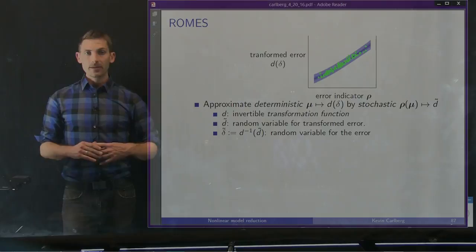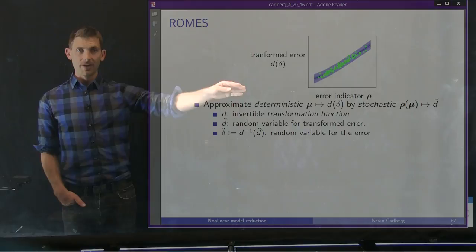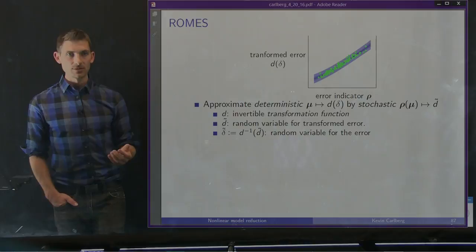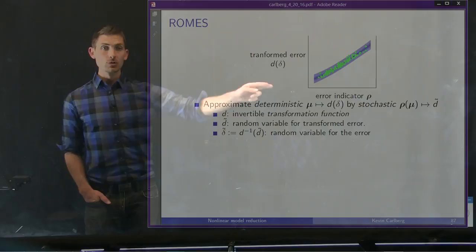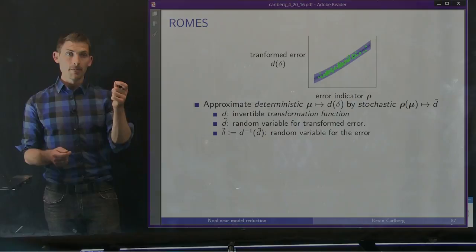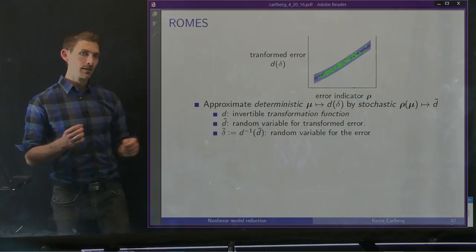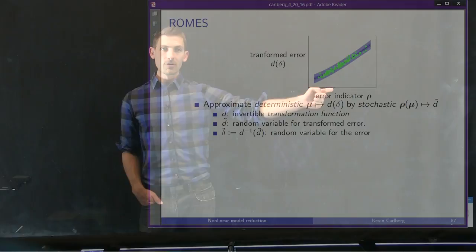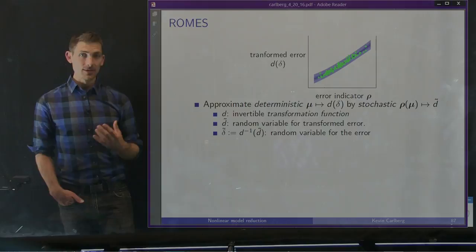To be more formal, we take our error indicator rho and map it with Gaussian process regression to some transformed error. We allow the existence of some transformation function D, sometimes a logarithmic transformation. The main idea is we approximate a deterministic mapping from parameters to a transformed ROM error with a stochastic mapping that goes from the error indicator to a model for that transformed error. It's stochastic because for a given value of an error indicator, we don't exactly know what the ROM error is, but we have a pretty good handle on it.